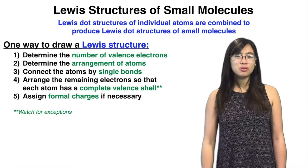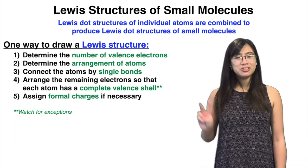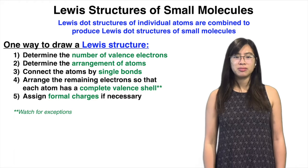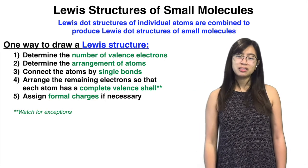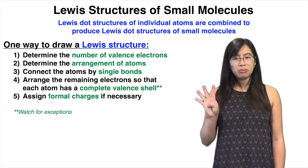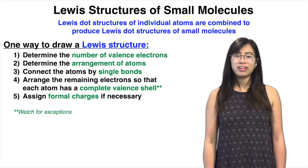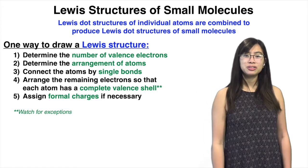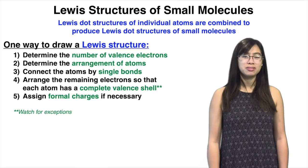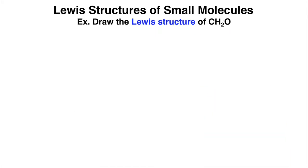The first step is to determine the number of valence electrons of the whole molecule. Step two is to determine the arrangement of atoms in the molecule. Step three is to connect the atoms by single bonds. Step four, arrange the remaining electrons such that each atom has a complete valence shell. And remember to watch out for those exceptions, especially from group 3A atoms. And lastly, step five is to assign formal charges if necessary. Now let's do an example.